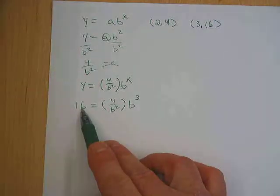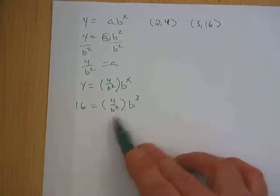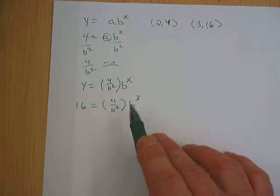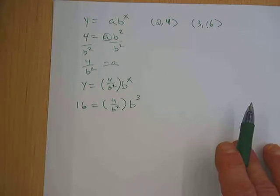So this 16 becomes the y, this 3 is my x, and I have 4 over b squared times b cubed.